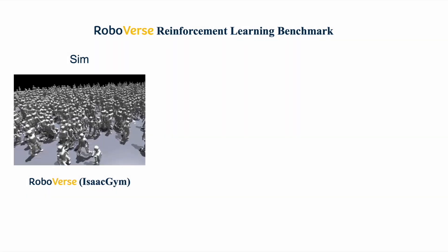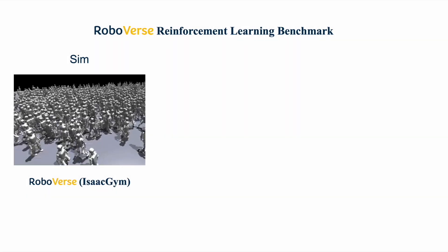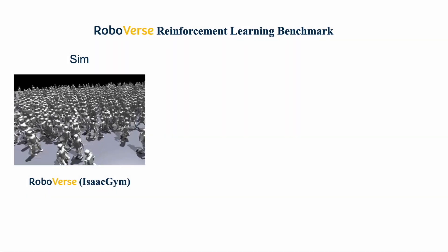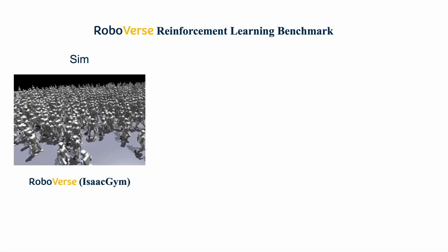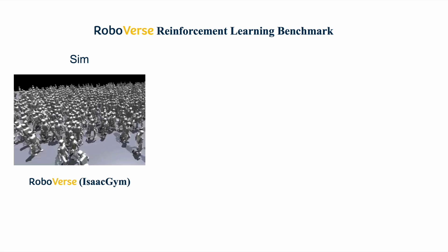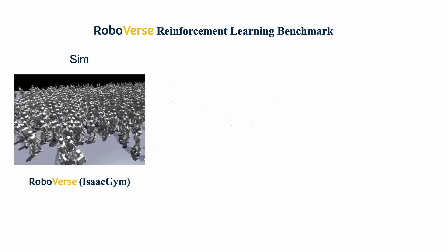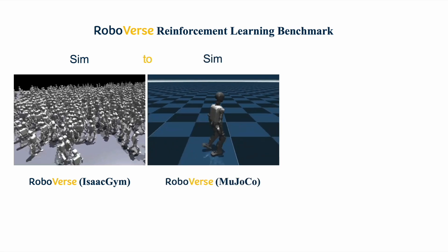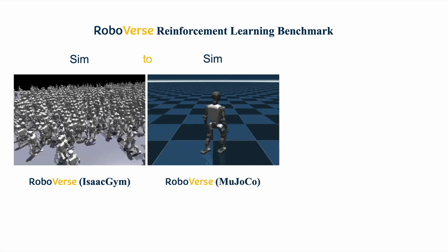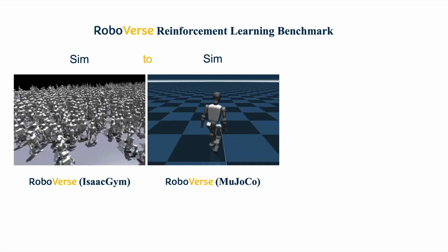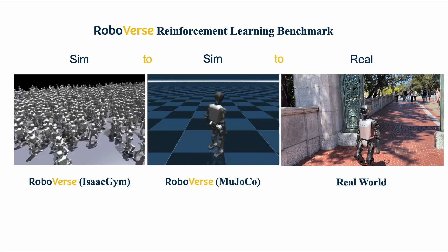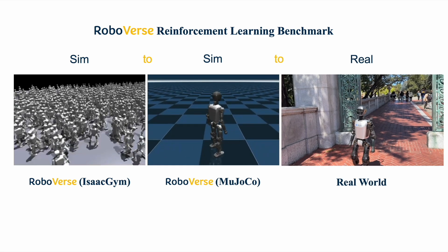We further demonstrate that with the Roboverse reinforcement learning framework and its seamless cross-simulation capability, we can transfer a challenging humanoid whole-body control policy through a sim-to-sim-to-real approach.